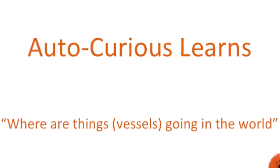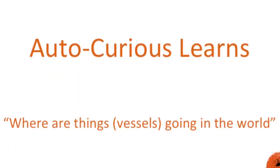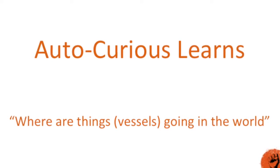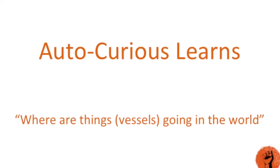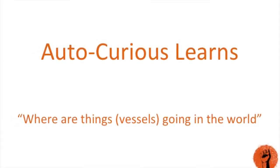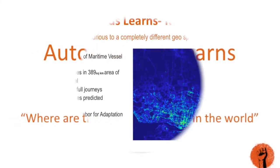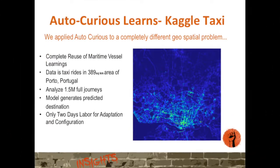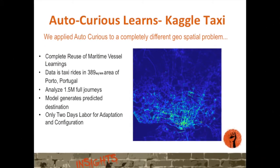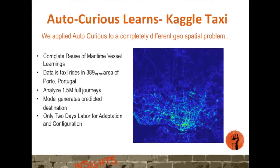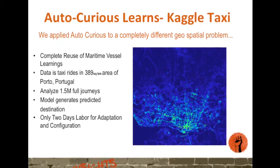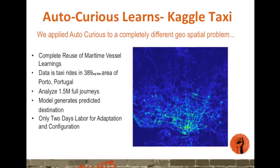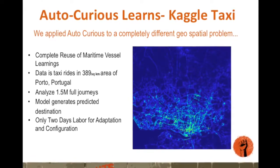At the end of this particular pilot, AutoCurious had learned a new skill — it knew how to make accurate predictions of where vessels were going in the world. So we challenged AutoCurious and pointed it at a different dataset: one composed of millions of historic taxi trips in Portugal, of all places.